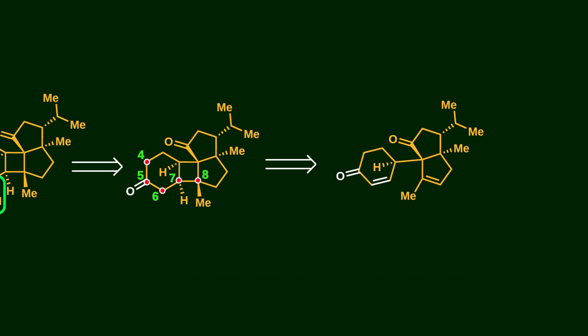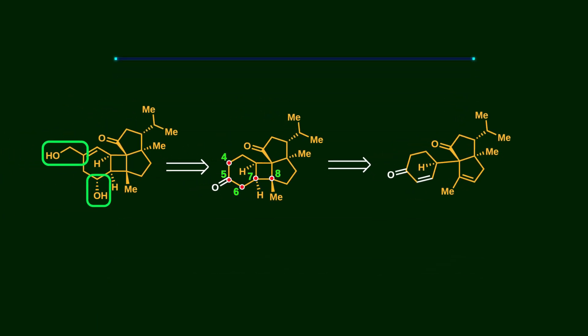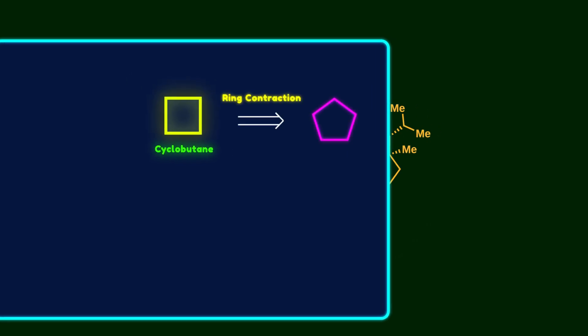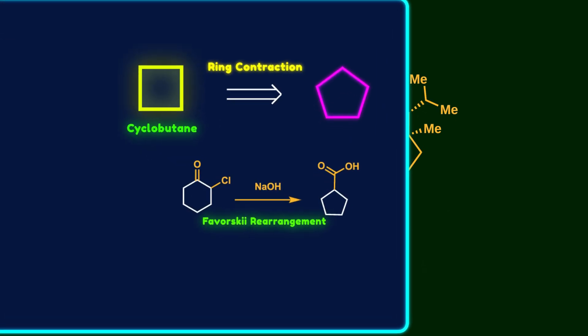The presence of the ketone at C5 is a strategic decision because it allows activation of C6 and C7 in its conjugated form and sets the stage for constructing the critical four-membered ring. There are two common strategies for creating a cyclobutane ring. The first is ring contraction of a five-membered ring, like the Favorskii rearrangement or Wolff rearrangement.